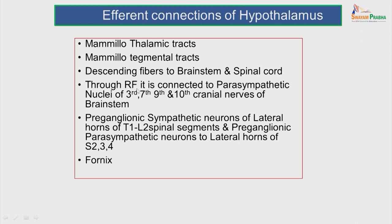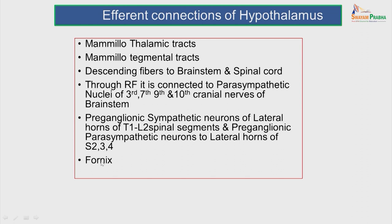Descending fibers to the brainstem and spinal cord are also efferents of the hypothalamus. It is connected to the reticular formation and to the parasympathetic nuclei of the 3rd, 7th, 9th and 10th cranial nerves of the brainstem. It also has efferents from the preganglionic sympathetic neurons of the lateral horn T1 to L2 spinal segments and from the preganglionic parasympathetic neurons to the lateral horn of S2, S3 and S4. The efferent is also connected to the pituitary gland through the hypothalamo-hypophysial tract.